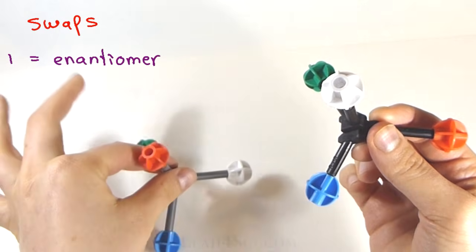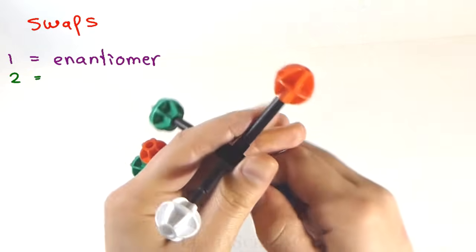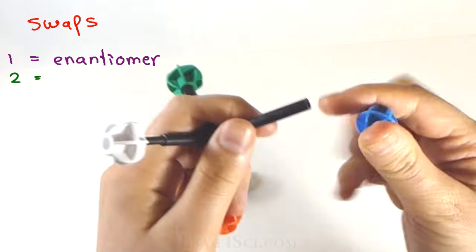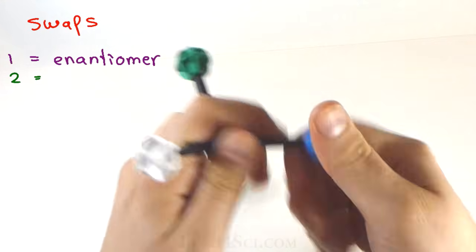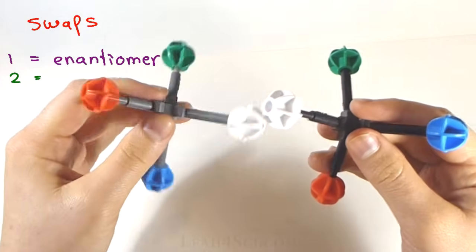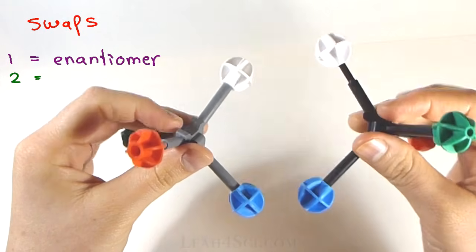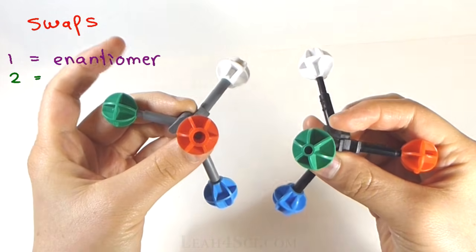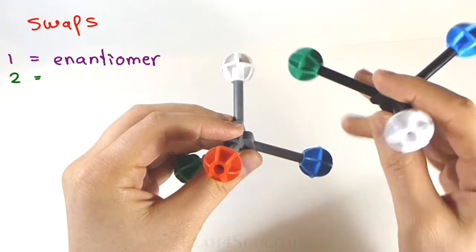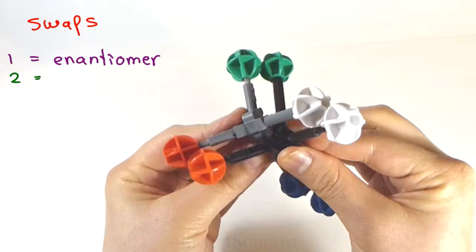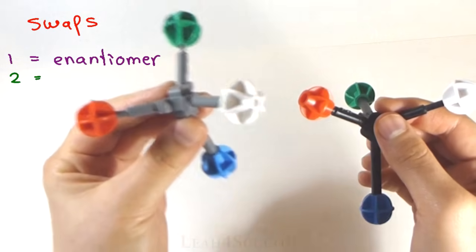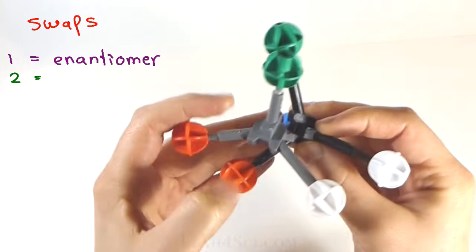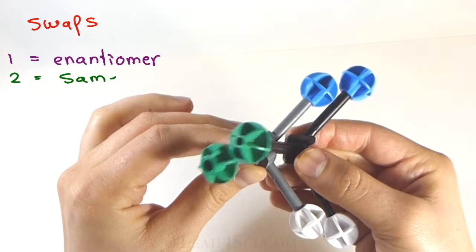Since we're using the grey one as a reference, let's put it down and now we'll swap any two other random substituents. It doesn't matter what we swapped second in reference to what we swapped first. Now let's see if we can still have that mirror between the two, we can't. The blue and white are mirrored, the green and red are not. Now what happens if I try to superimpose them? Look at that, they're perfectly superimposable. We started with a molecule, did one swap to get the enantiomer but when we did a second swap, we're back to the same exact configuration.